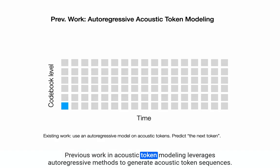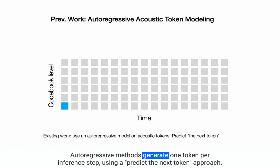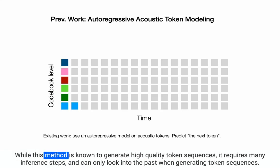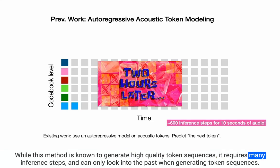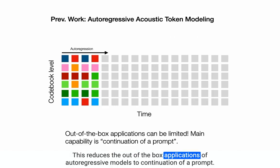Previous work in acoustic token modeling leverages autoregressive methods to generate acoustic token sequences. Autoregressive methods generate one token per inference step using a predict-the-next-token approach. While this method is known to generate high-quality token sequences, it requires many inference steps and can only look into the past when generating token sequences. This reduces the out-of-the-box applications of autoregressive models to continuation of a prompt.